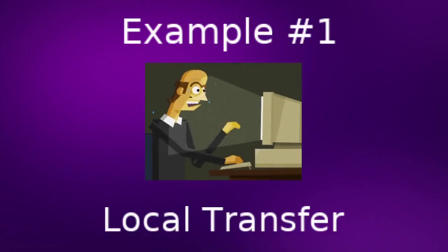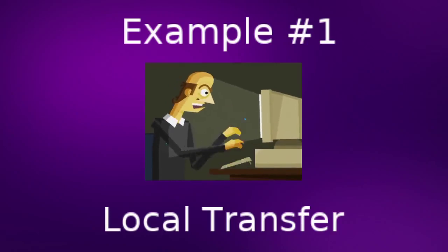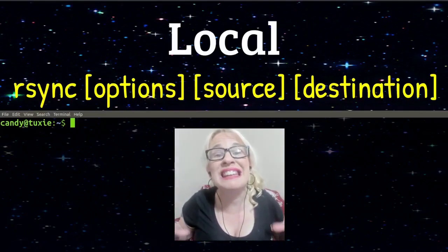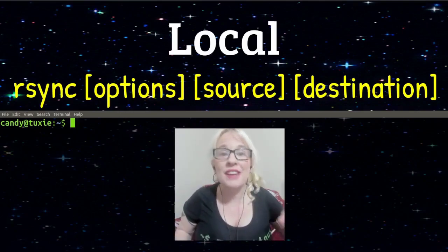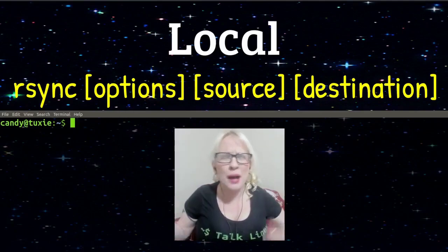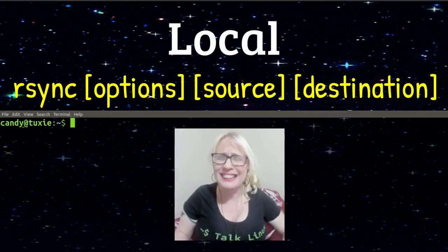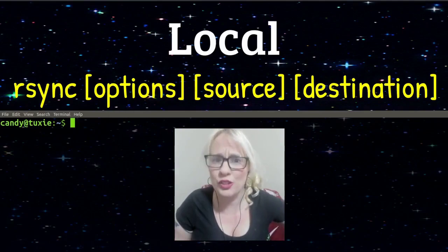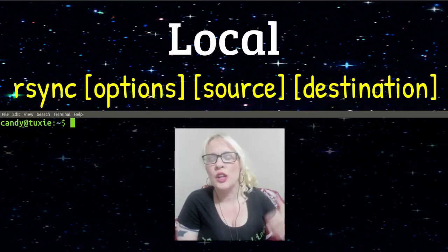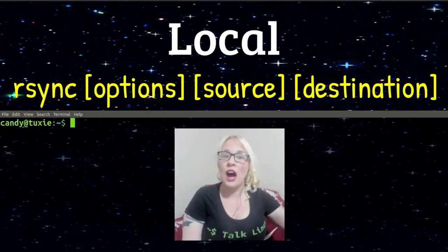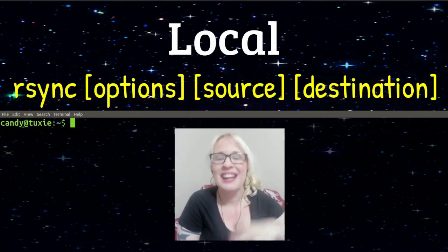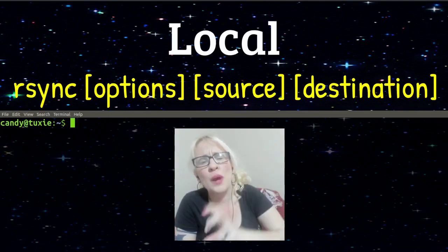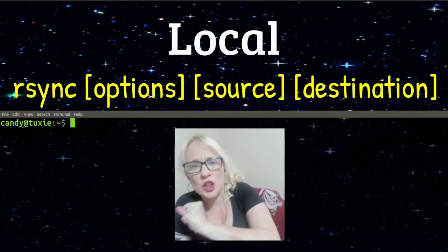Number one, a simple local file transfer. Up here you can see the basic command configuration for rsync: the keyword rsync, followed by whatever options you want to throw in. There are tons of options you can use with rsync. Next we're going to include the source of the file that we want to transfer, and finally we're going to put in the destination where we want to transfer it to.